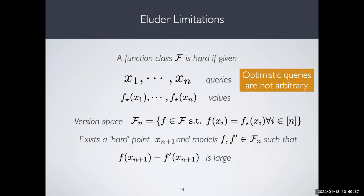The problem when analyzing optimistic algorithms using eluder dimension is that the queries are not actually arbitrary — queries made by an optimistic algorithm are optimistic actions of a model. This is not taken into account by eluder dimension. It could be that the hard point in the eluder sequence has a very low value, but that may not matter because if it's a very low value for all remaining models, an optimistic algorithm will never actually pick it.